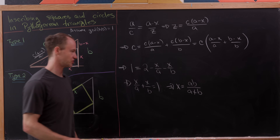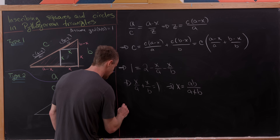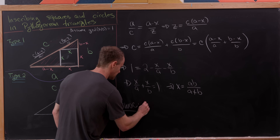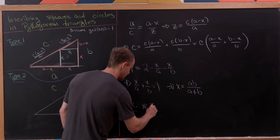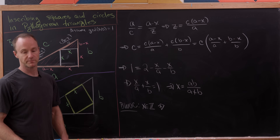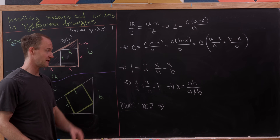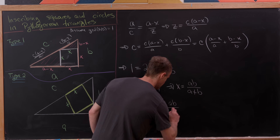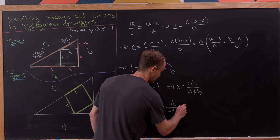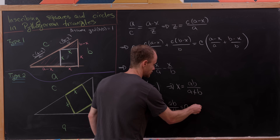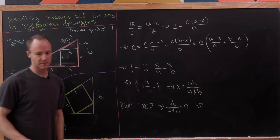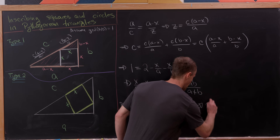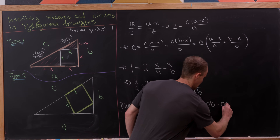Solving, we get x equals ab over (a + b). We want to claim this is never an integer. By way of contradiction, suppose x is an integer n, so ab over (a + b) equals n, an integer. Rearranging gives ab equals na + nb.